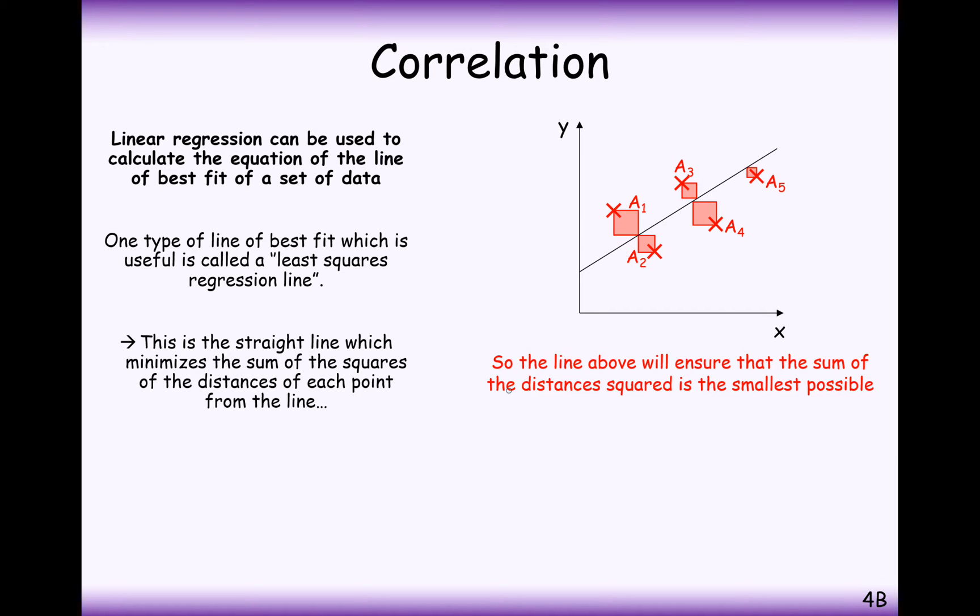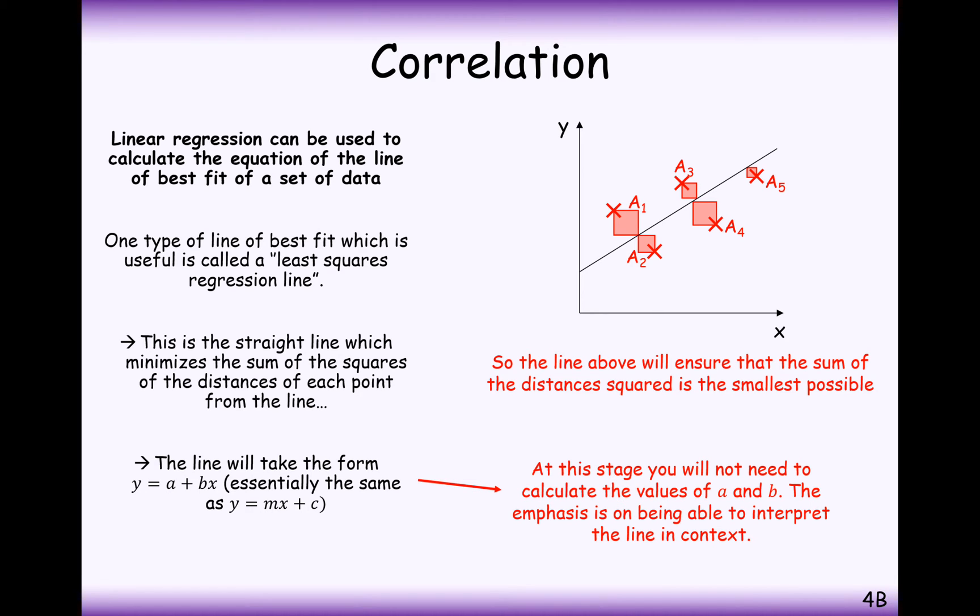So it minimizes the sum of all the distances to the point as far as possible. And it's generally a straight line. It's always a straight line in this module here. It could be a quadratic curve when you get higher up in mathematics, but for A-level, it's going to be a straight line.